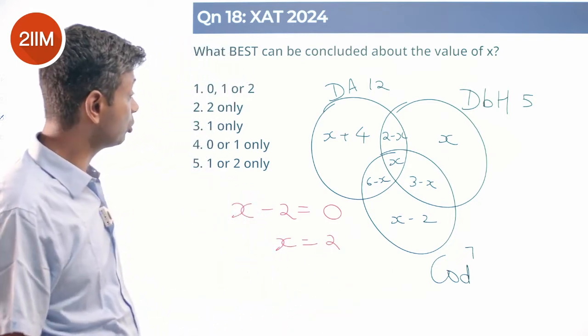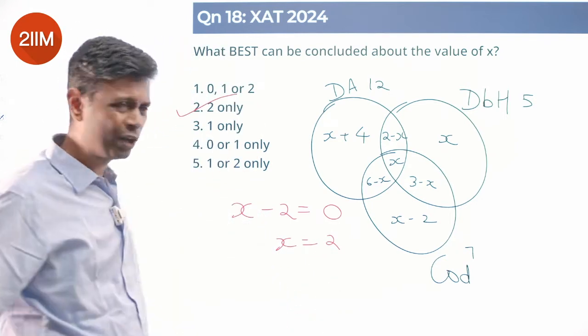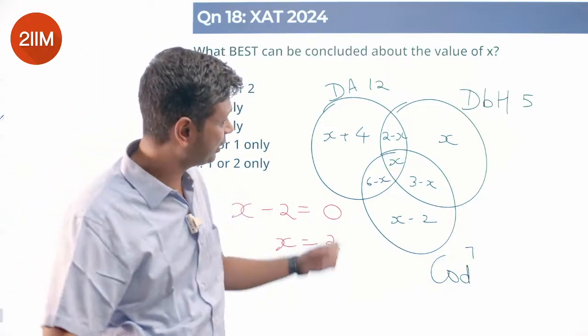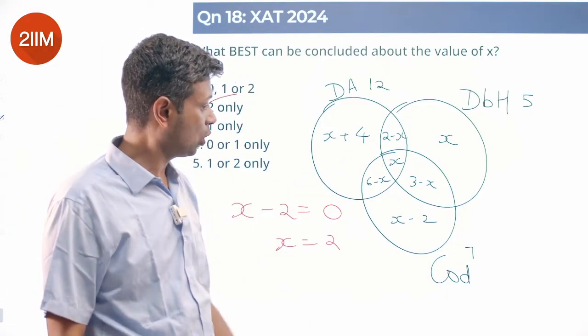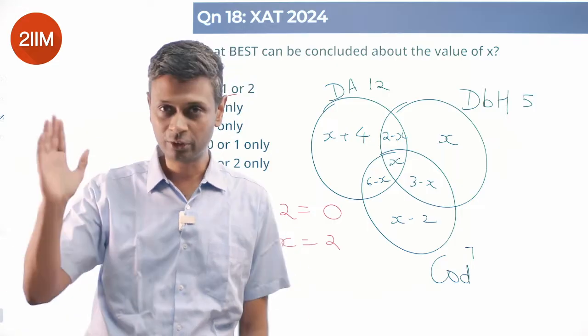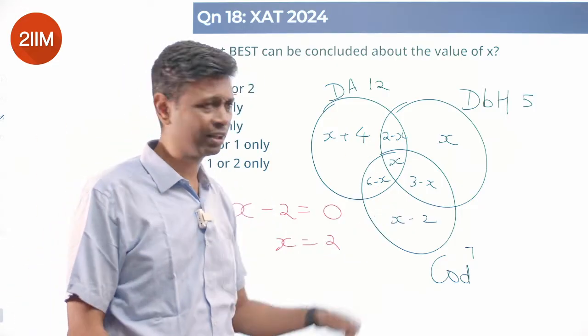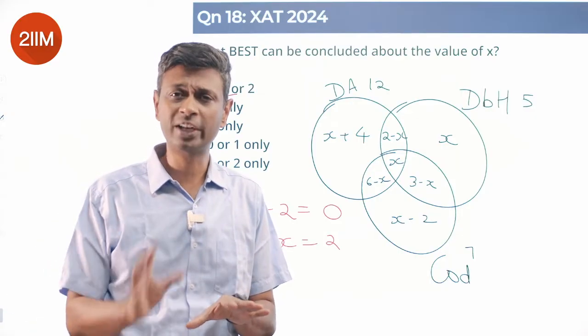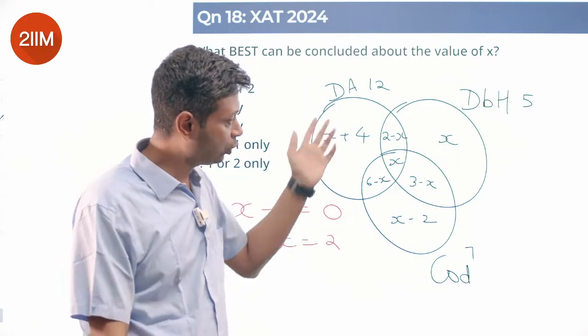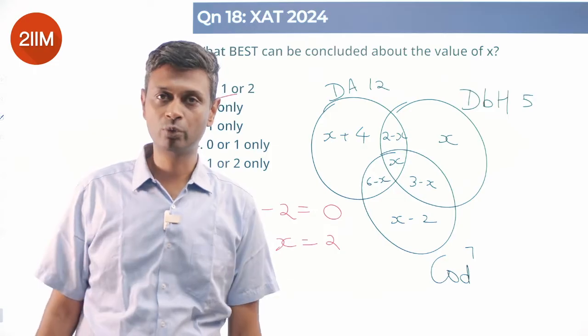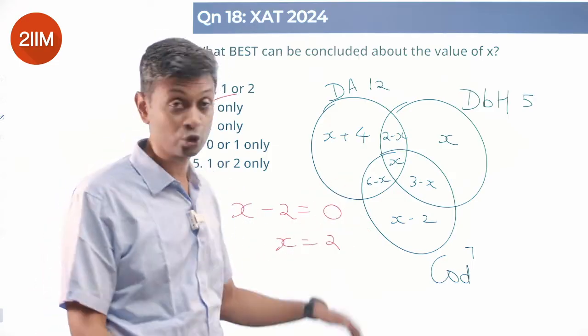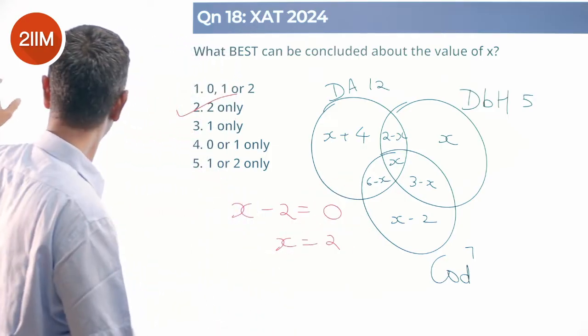So what best can be concluded about the value of X? X is 2 only. Only 2 is possible, nothing else is possible. If it were 3, this will become negative. If it were 1, this will become negative. Done. Beautiful question because you put everything in, then X minus 2 should exist, 2 minus X should exist. It exists as in both should be non-negative. X minus 2 and 2 minus X are non-negative, both should go to 0. X should be 2.